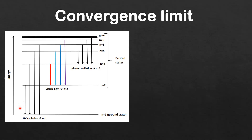Here we have the main energy levels in the hydrogen atom, starting with n equals 1, which is the lowest energy level or the ground state, then moving on to n equals 2, n equals 3, n equals 4, n equals 5, and all the way up to n equals infinity. As the energy levels increase in energy, they get closer together until they converge.